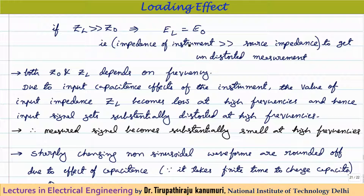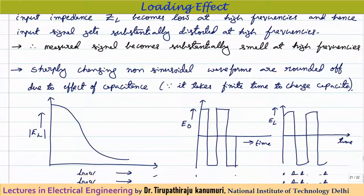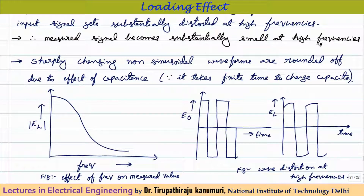When measuring AC, Z0 and ZL are frequency-dependent impedances. Any instrument will have some capacitance effect, which is negligible at low frequencies but becomes dominant at high frequencies. Due to this capacitance, the load impedance ZL becomes very low at high frequencies, causing the input signal to get substantially distorted. The measured value decreases drastically as frequency increases beyond a certain range.